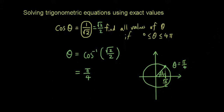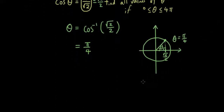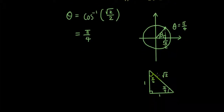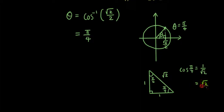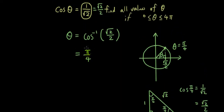Hopefully you won't be asked to draw the exact value triangle, but if you want you could draw it — make sure you go back to our exact value tutorials. From that triangle, cos(π/4) = 1/√2 = √2/2 when rationalized. That's all the working out you need: these two diagrams to arrive at this answer.